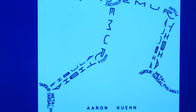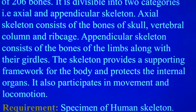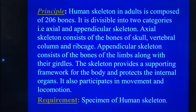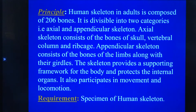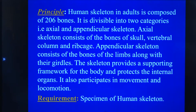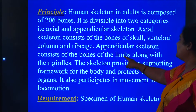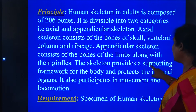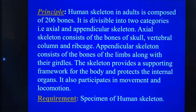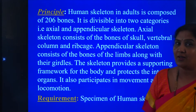This is a wonderful picture and easy to learn. Now let us know the principle behind it. The human skeleton in adults is composed of 206 bones. It is divisible into two categories: axial and appendicular skeleton. The axial skeleton consists of the bones of the skull, vertebral column, and ribcage. The appendicular skeleton consists of the bones of the limbs along with the pectoral and pelvic girdles. The skeleton provides a supporting framework for the body, protects the internal organs, and participates in movement and locomotion in association with the muscles.